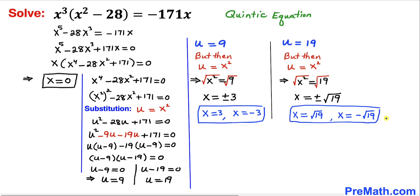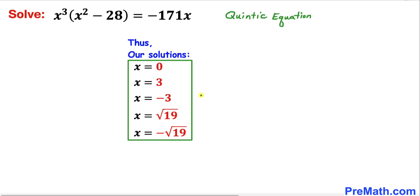So we have all five solutions: x equals 0, x equals positive 3, x equals negative 3, x equals square root of 19, and x equals negative square root of 19. Thanks for watching and please don't forget to subscribe to my channel for more exciting videos.